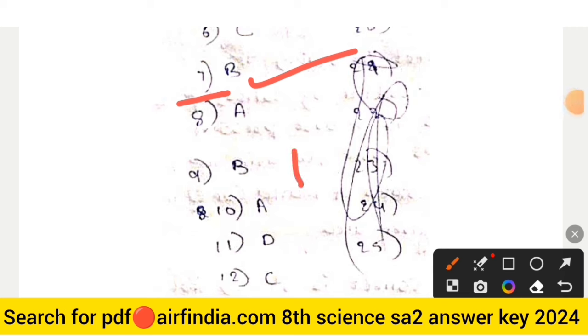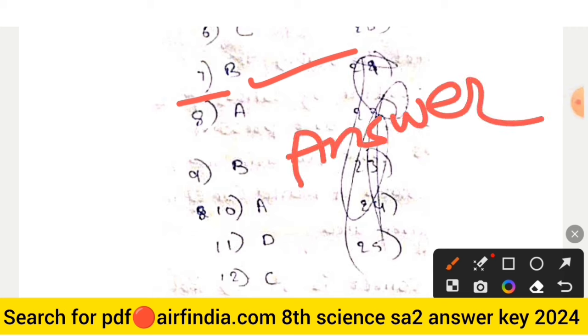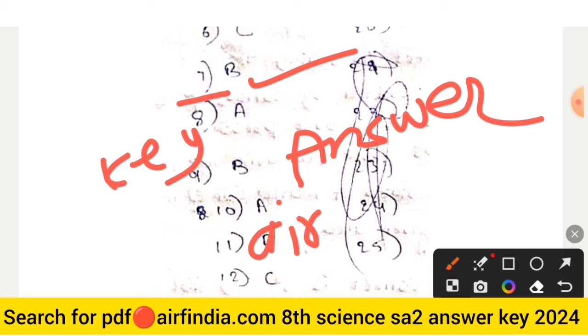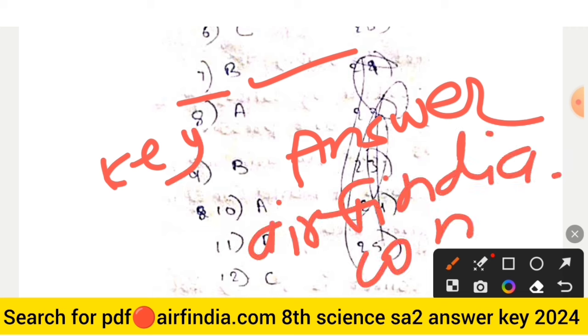If you want to download this answer key PDF on your mobile, go on Google and type arfindia.com, then type your class. You can download PDFs easily on your mobile.